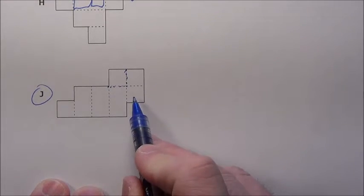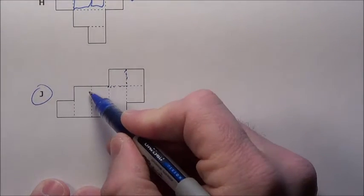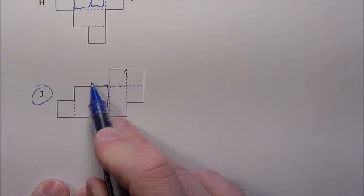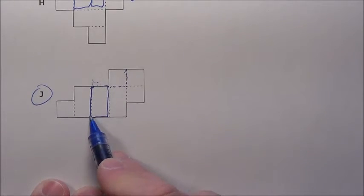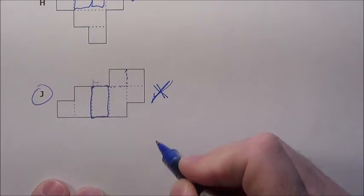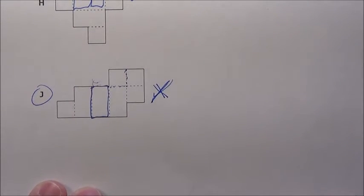But you can see this guy is not going to work. As we fold it, imagine this sort of being your base. As this side folds up, you're going to end up with coverage over on this edge and you're not going to be able to cover back. So J is going to be our answer. That should have been an X for 'hey, you don't work.' So in this problem, the answer is going to be J. J is the one that will not form a rectangular prism.